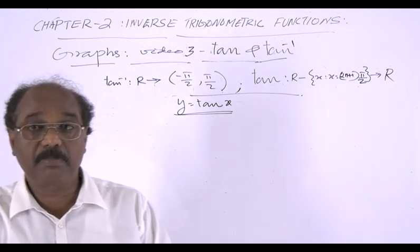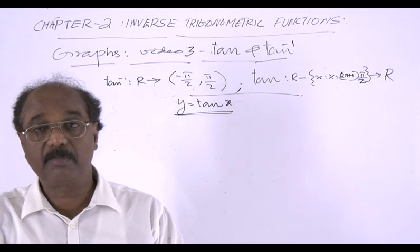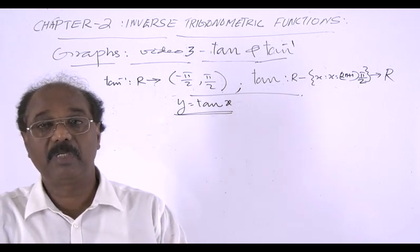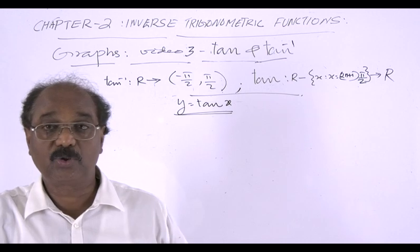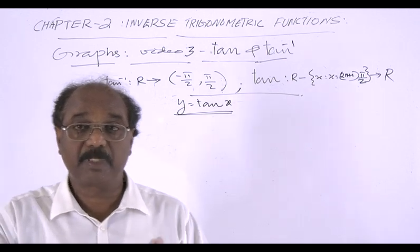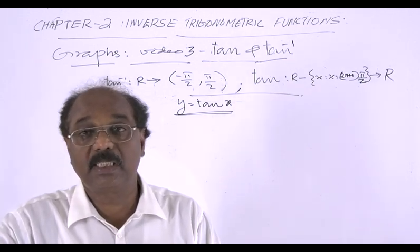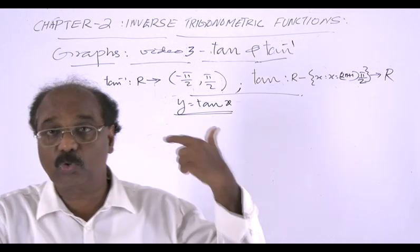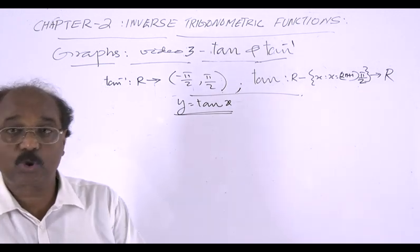The odd multiples of π/2 are excluded — that is π/2, 3π/2, 5π/2, and so on, and also −π/2, −3π/2, −5π/2, and so on. Those points are excluded from the domain.